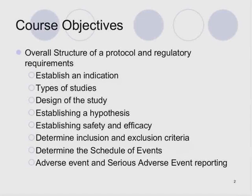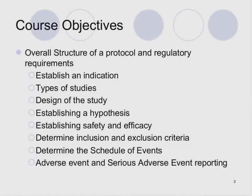The course objectives in your course catalog are really talking about the overall structure of the protocol and the regulatory requirements for the protocol. We'll talk about the indication, the types of studies you may or may not be involved in, the design of the study, establishing the hypothesis — which is really where you start with your protocol — establishing your safety and efficacy criteria, determining your eligibility criteria which are primarily inclusion and exclusion criteria, the schedule of events or schedule of assessments, and different types of reporting of adverse events and serious adverse events.